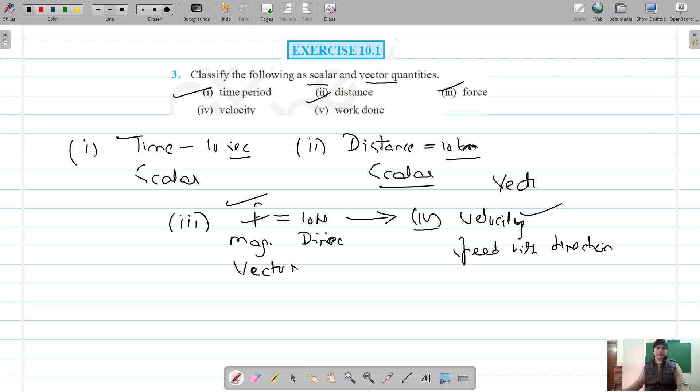Last one is work done. There is no direction for work done, it's just a numerical value, let's say 10 Joule of work is done. So this is also a scalar quantity.